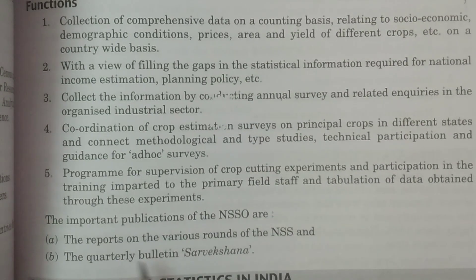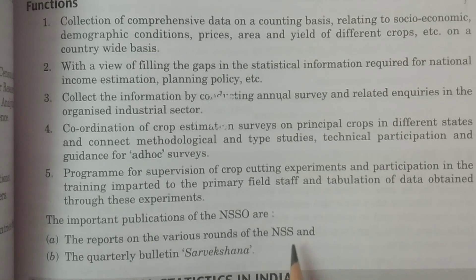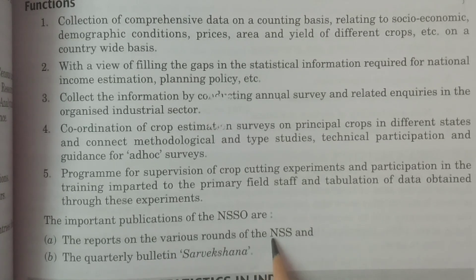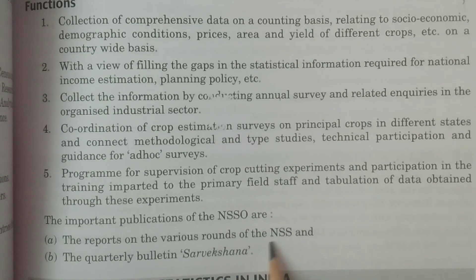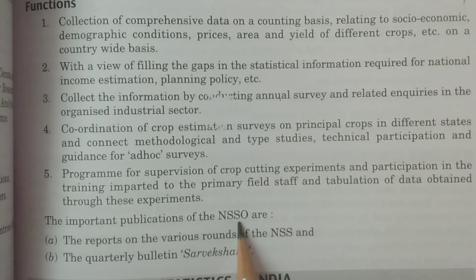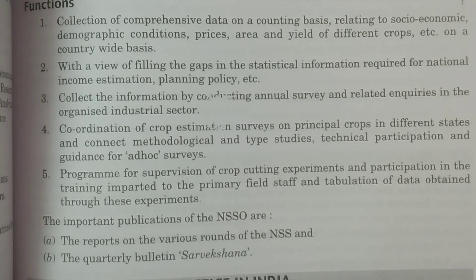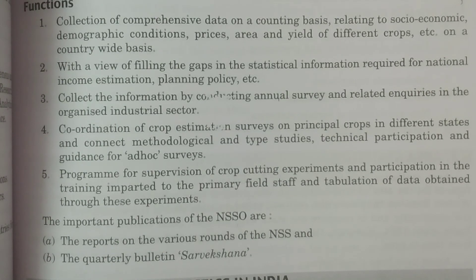The important publications of NSSO include reports on various rounds of NSS surveys — such as the 51st, 52nd, 53rd rounds and so on — for which data is collected and reports are prepared. There is also a quarterly bulletin called the Survey Section, which is published by the National Sample Survey Office. That covers the topic of NSSO.